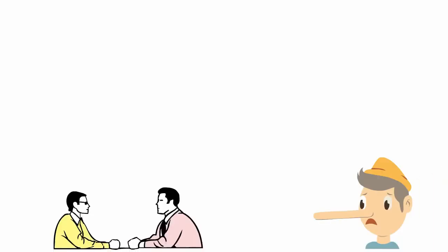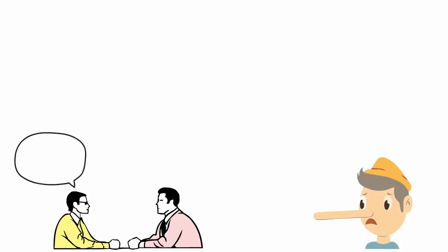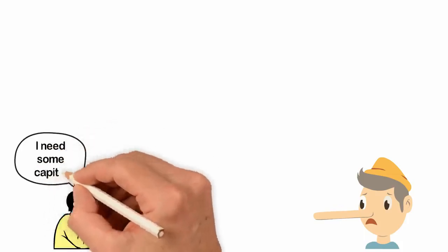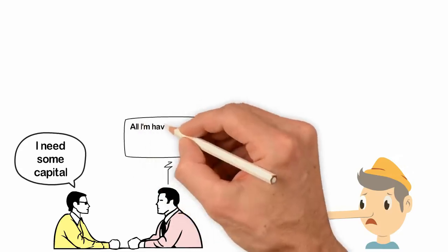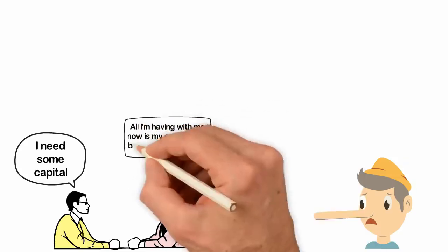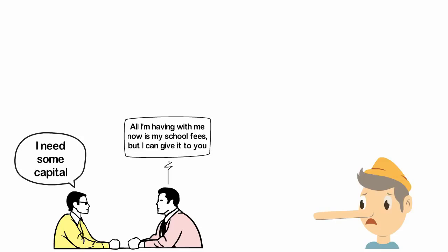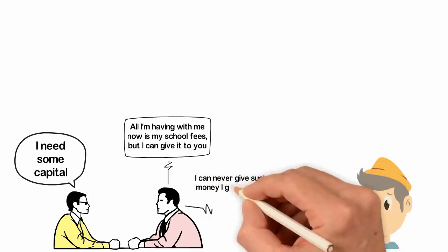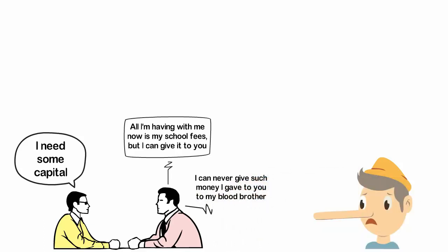A personal story to demonstrate this is what happened to me around the year 2011. I needed some capital and I discussed it with a friend. The only money he had was the money he wanted to use for his school fees, but he decided to give it to me, taking the risk of not being able to finish his education. And he told me something. He said he can never give such money he gave to me to his blood brother and the reason is that he didn't trust them.